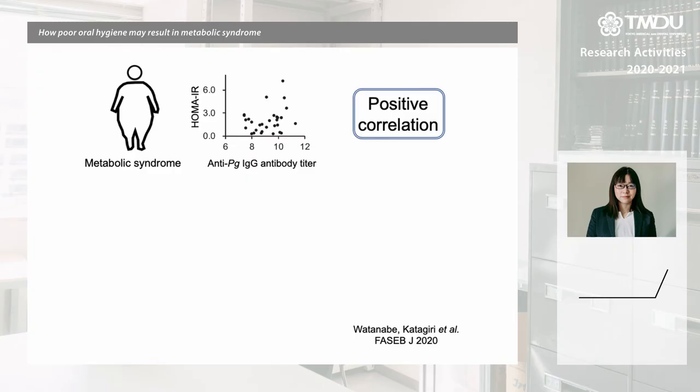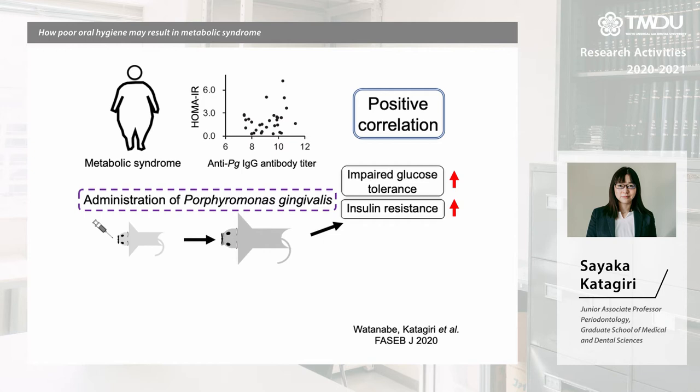We first investigated antibody titers to P. gingivalis in the blood of patients with metabolic syndrome and found a positive correlation between antibody titers and increased insulin resistance. To understand the mechanism behind the clinical observation, we then turned to an animal model.